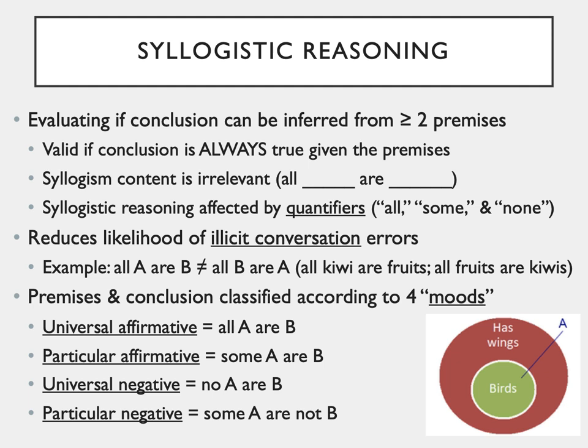Syllogistic reasoning reduces the likelihood of what are known as illicit conversion errors. For example, "all A are B" is not the same thing as "all B are A." All kiwis are fruits is true, but all fruits are not kiwis.